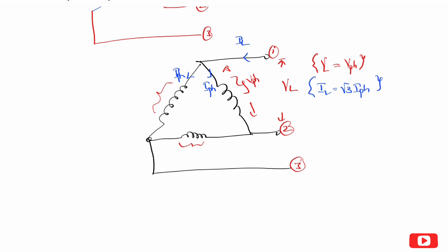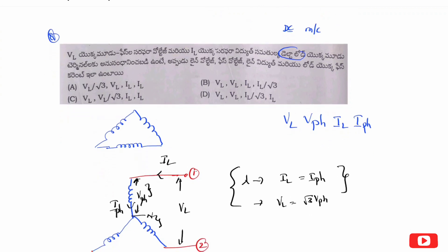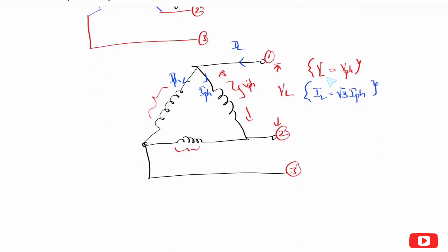This is it. So, delta-star is the main concept. If we look at the question, we have a delta load. In delta load: line voltage, phase current, phase voltage, line current, line phase current. So, if you look at the line voltage Vr — Vr is equal to phase voltage. In delta, phase voltage is equal to load voltage.